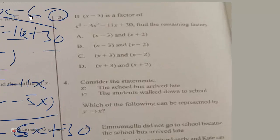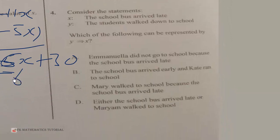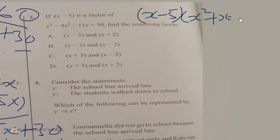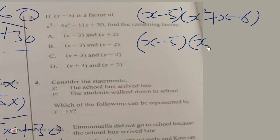Dividing negative 6x by x gives minus 6. Multiplying minus 6 by (x minus 5) gives negative 6x plus 30. Subtracting gives zero. So the polynomial factors as (x minus 5) times (x squared plus x minus 6). Factoring x squared plus x minus 6 using factors of 6 that add to 1: we get (x minus 2)(x plus 3).